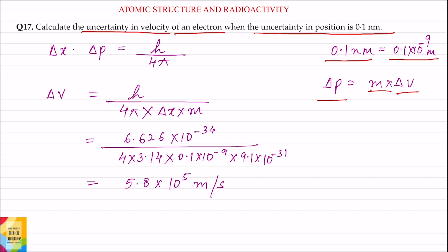And the equation is delta x into delta p is equal to h divided by 4 pi. From this, putting the value of delta p as m into delta v, the value of delta v will be equal to h divided by 4 pi into delta x into m.